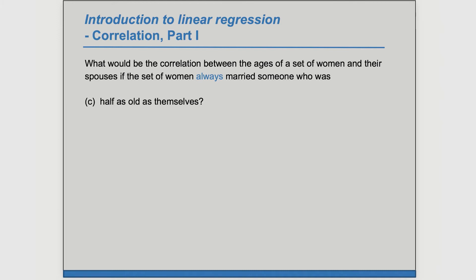Our third example: the spouse is always half as old as the woman. We can make a table to see what's going on. If the woman is 40, the spouse would be 20, and so on. Even though the spouse is always younger, when the woman is older, the spouse is also older. So the correlation is still positive. Because it's a perfect linear positive correlation, we have R equals positive one again.